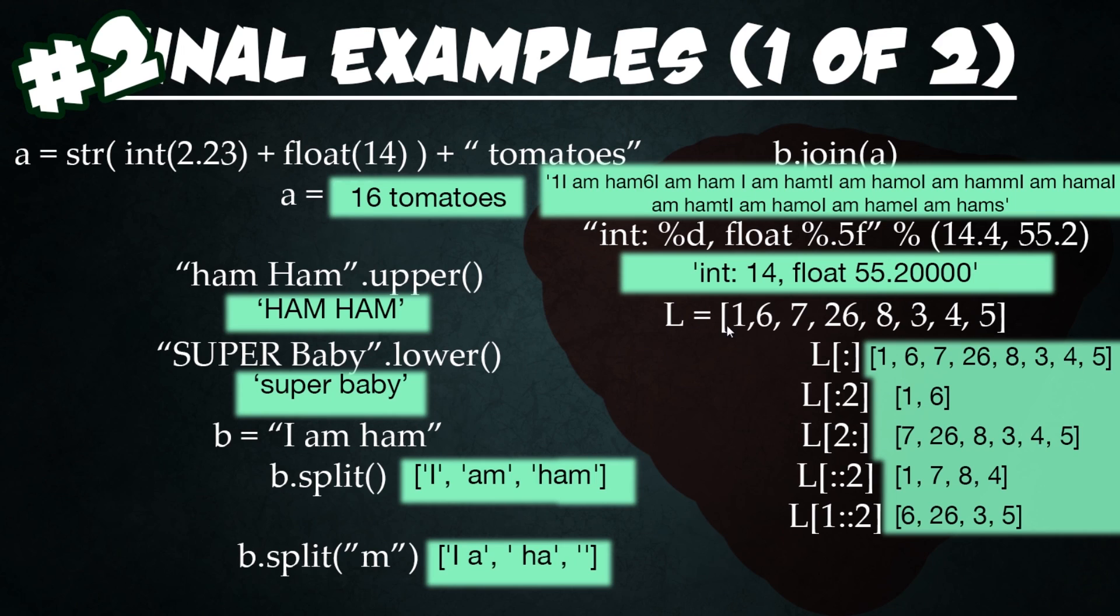Then we have a list of a whole bunch of numbers. Now, this is really interesting stuff, what you can do to manipulate lists and get specific outputs from them. I find myself using these tricks all the time. So if you ever want to duplicate a list, you can actually just do brackets, colon, bracket, and that'll output an exact copy of the list.